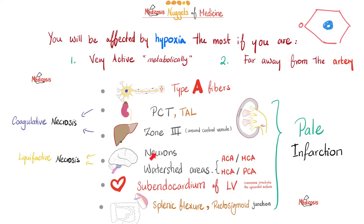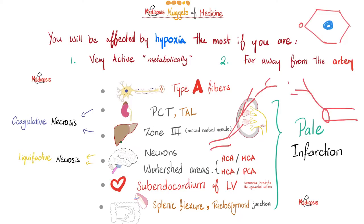In the nervous system, neurons are vulnerable because they are very metabolically active. The watershed areas of the brain are also at risk — the area between the territory supplied by the anterior cerebral artery and the territory supplied by the middle cerebral artery. As arteries branch out they get smaller and smaller, so there is more oxygen proximally than distally. The edge zones — called watershed areas — between the ACA and MCA, and between the MCA and PCA, are particularly vulnerable to hypoxia.